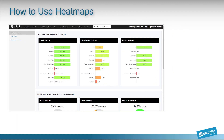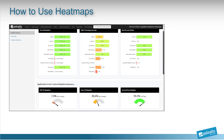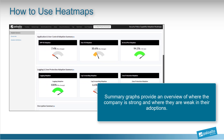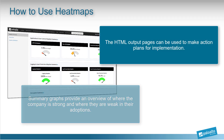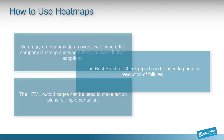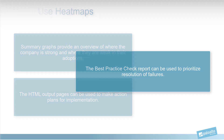When analyzing heatmaps, the best place to start is by looking at the summary graphs. The graph provides a quick overview of where the company is strong and where they are weak in their adoption. The details from the HTML output pages can be used to make action plans for implementation. And the failed best practice check spreadsheet that comes with the report generation gives a list of checks that failed. This list can be used to prioritize which check results should be resolved now and which ones to resolve later.